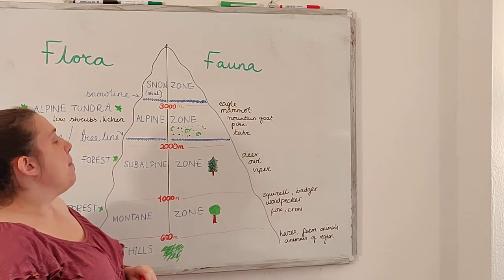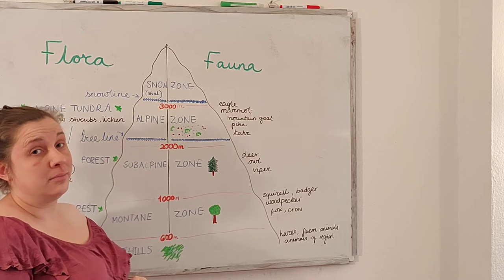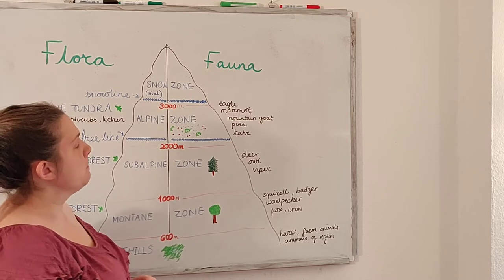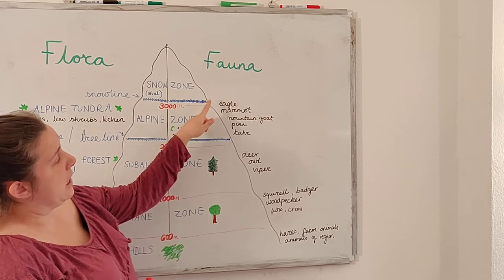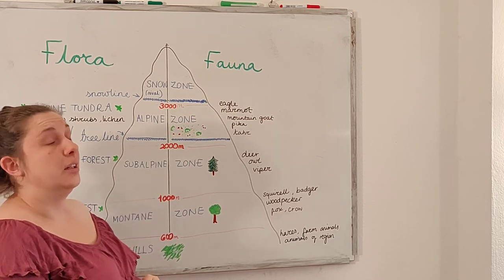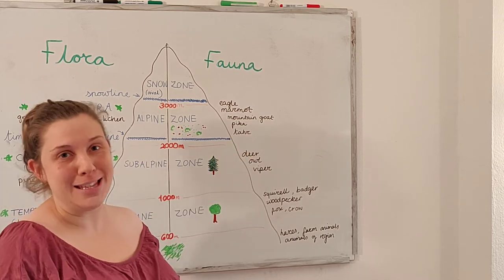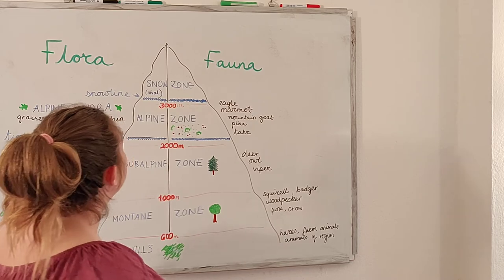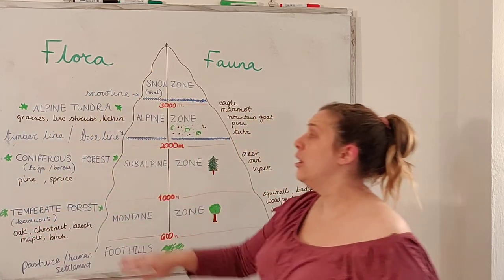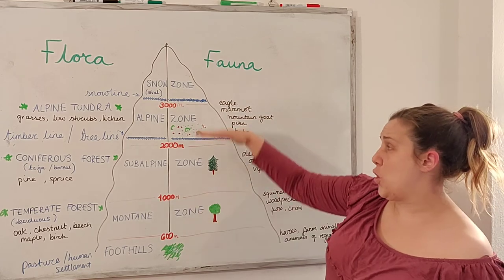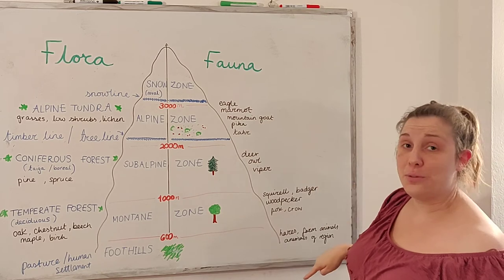Going up into the subalpine zone, some ideas: deer, owl, a viper, snakes. Up in the alpine zone: eagle, marmot, mountain goat, a pika or a tahr. So if we go to the Himalayas, we might see something more interesting. And then above, nothing. So those are our five zones, our different types of flora and our different types of fauna.